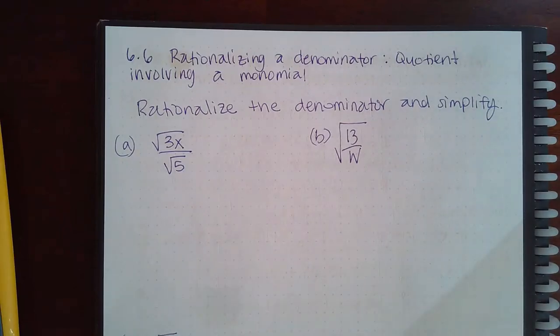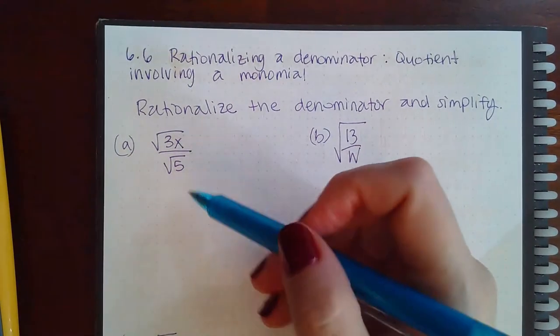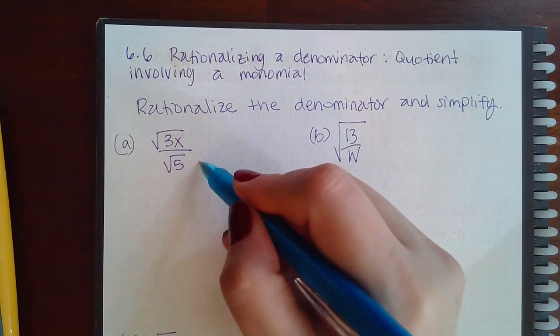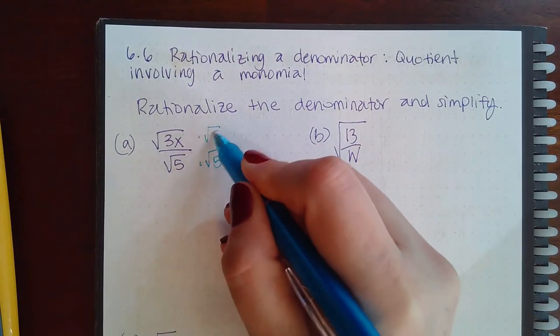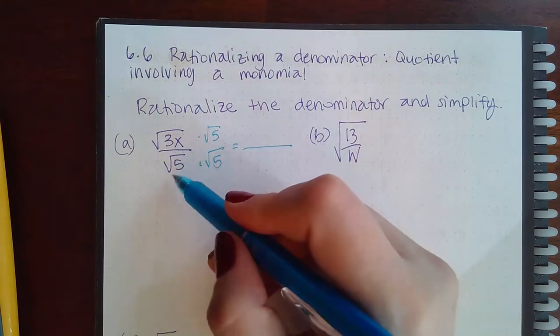Here we have rationalizing a denominator, the quotient involving a monomial. This one is already two separate fractions, so we can just write it in and do the bottom to make that radical go away. Square root...